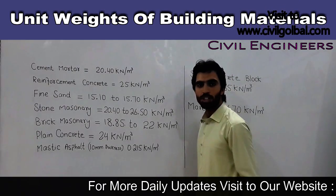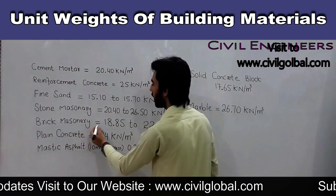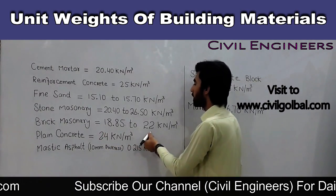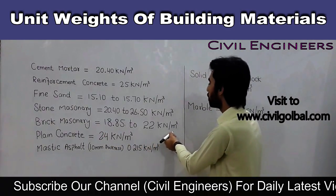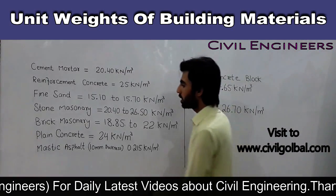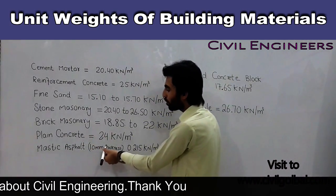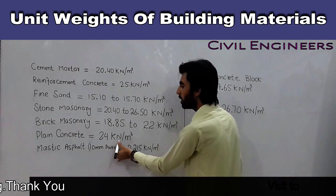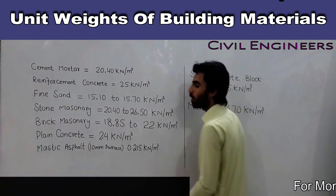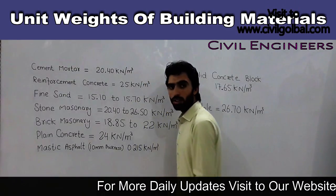The fourth one is stone masonry, with a unit weight of 20.40 to 26.50 kilonewton per meter cube. The next one is brick masonry. Plain concrete has a unit weight of 24 kilonewton per meter cube.